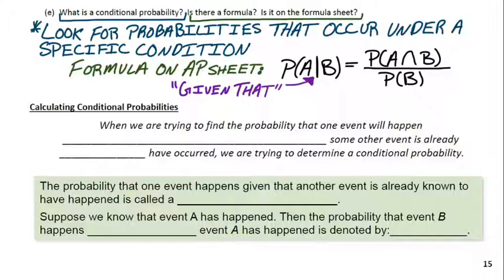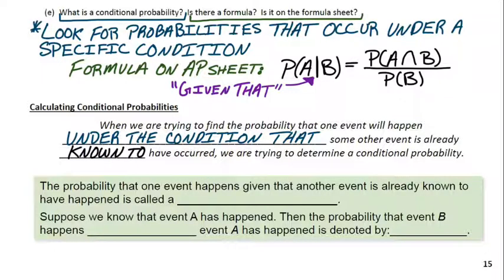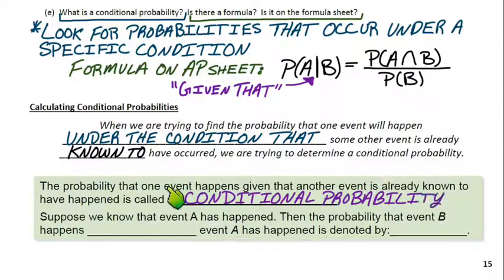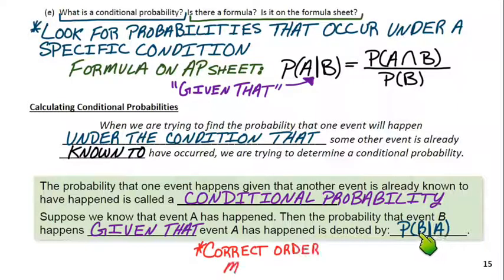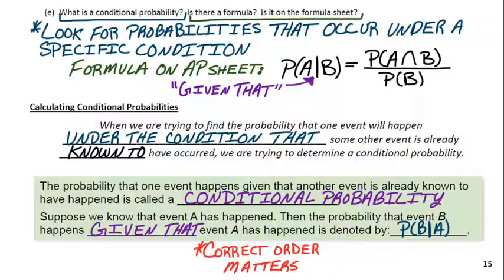The definition: the probability that one event happens, given that another event is already known to have happened, is called a conditional probability. If we know that event A has happened, then the probability that event B happens given that event A has happened is denoted probability of B given A — that's B with a vertical line, then A. The correct order matters. The event that's already occurred is the second event — you can think of it as the total number of outcomes. That's our specific condition.